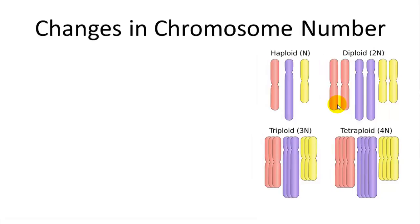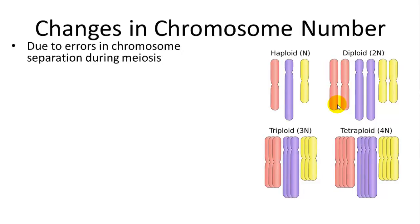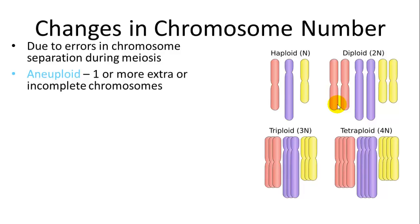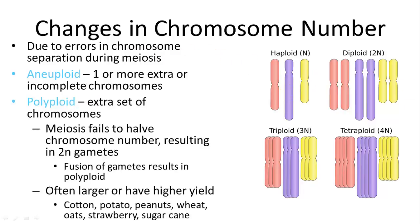Sometimes there are errors in meiosis which cause chromosome numbers to double, half, triple, or quadruple. Sometimes just one chromosome does this; sometimes the whole genome does. If the whole genome does it, you have a polyploid event — starting with a diploid organism where chromosomes fail to split to different sides and both go to the same side. Fertilization then leads to a triploid, or if both egg and sperm are diploid, a tetraploid. These usually have a higher yield.